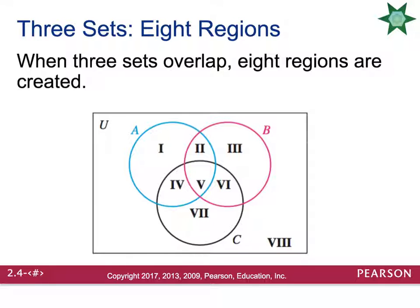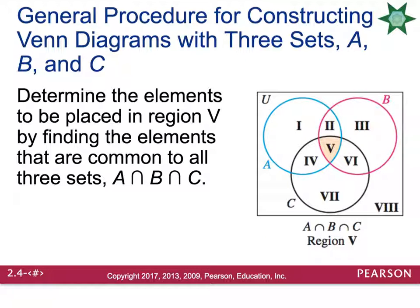When you have three sets in a Venn diagram, this is going to break your Venn diagram up into eight regions. The location where you're going to start, typically, is going to be the middle region, which is Region 5. This is where all three of the circles overlap. So if you're looking to categorize things, and all three categories have items that are in common, that will go into Region 5.